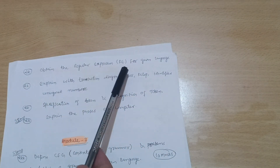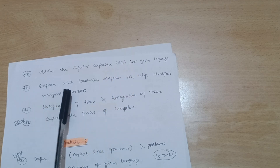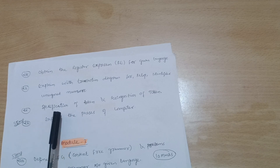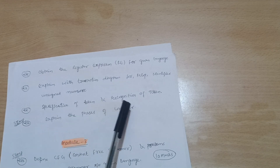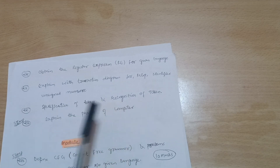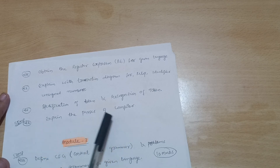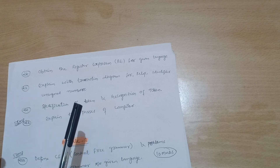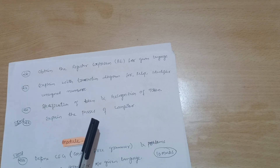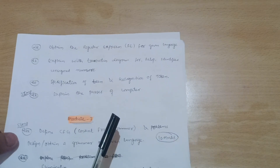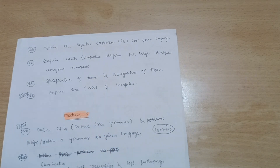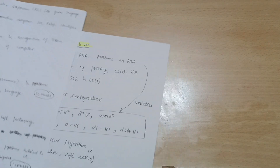Next, obtain the regular expression for a given language — this is the problematic part you have to practice. Explain with a transition diagram for relational identifiers and unsigned numbers, specification of a token, and recognition of tokens — another important topic. Explain the phases of a compiler — this is the most important one, where there are eight phases. You have to draw the diagram first; try to write a neat and clean sketch so that you will get at least half marks for this question.